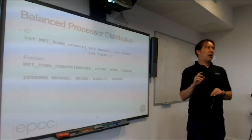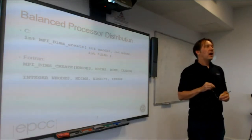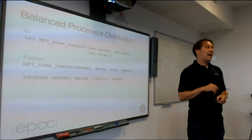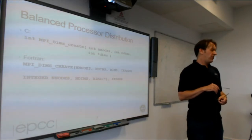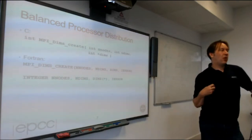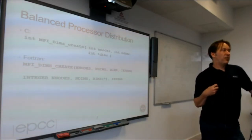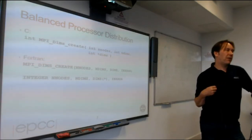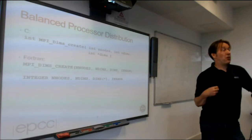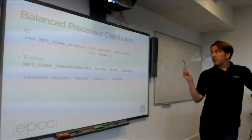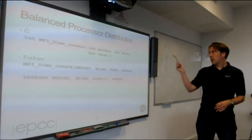MPI_Dims_create takes the number of processes and the number of dimensions, and tells you what the dimensions should be. It will give a balanced decomposition where the numbers are close to each other. But that may not be appropriate if you have an unbalanced problem domain — for example, if one dimension is much longer than the others. There is a trick that might help, which I'll cover on the next slide.